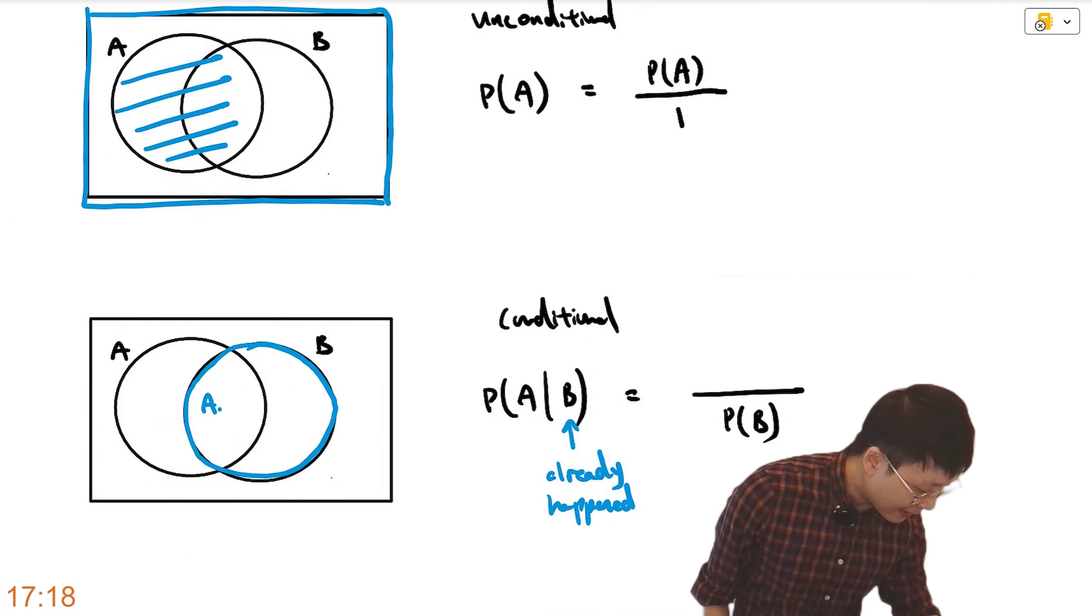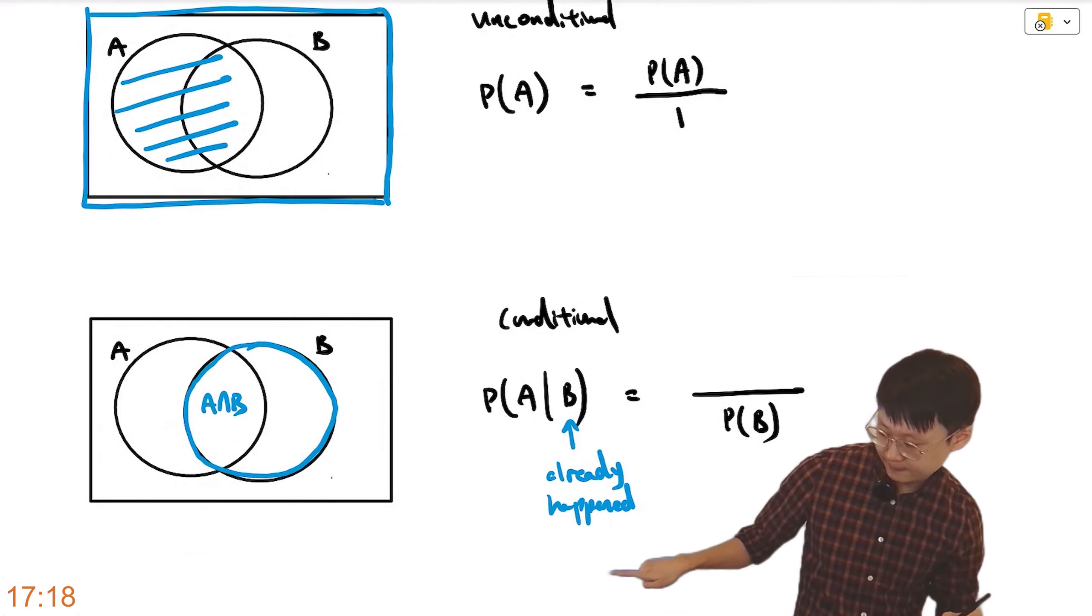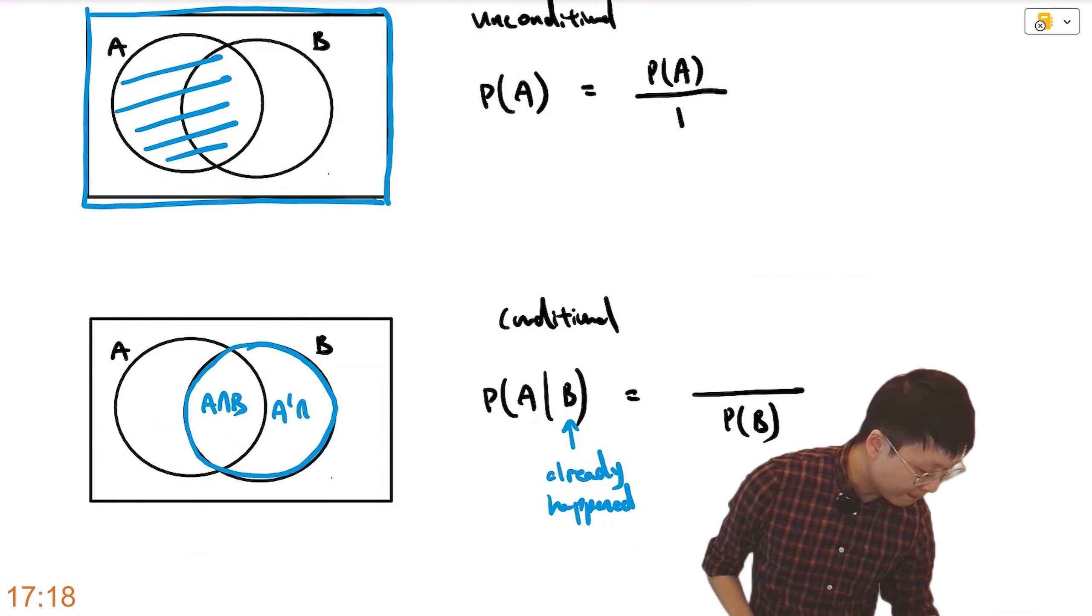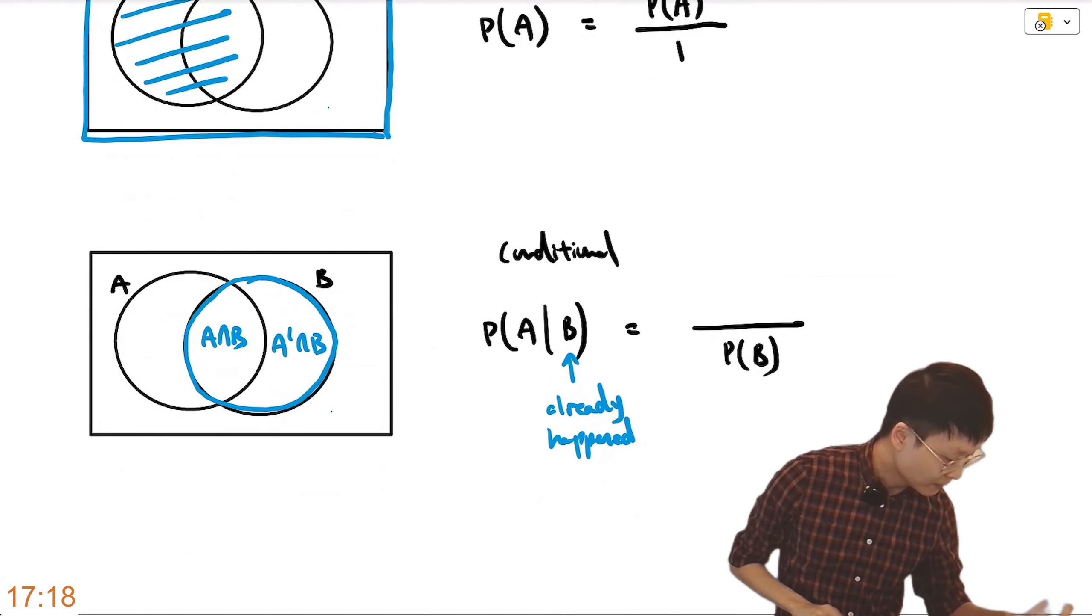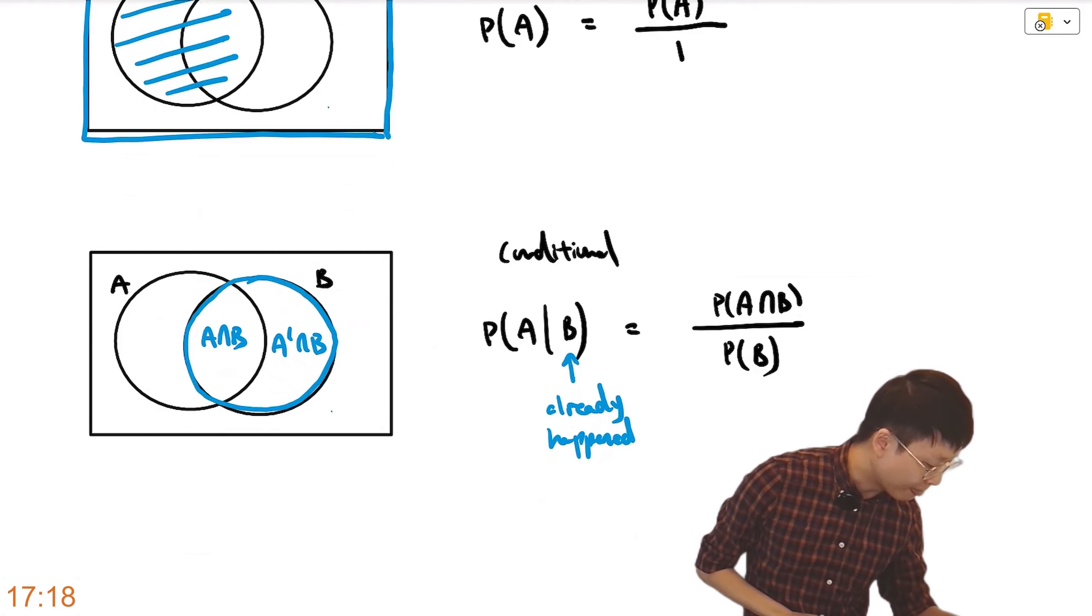And inside B, there are only two things that could happen. A happening together with B. Otherwise, A prime happening with B. Either A happen or do not happen within the universe of B. So it is only case one. A intersection B.